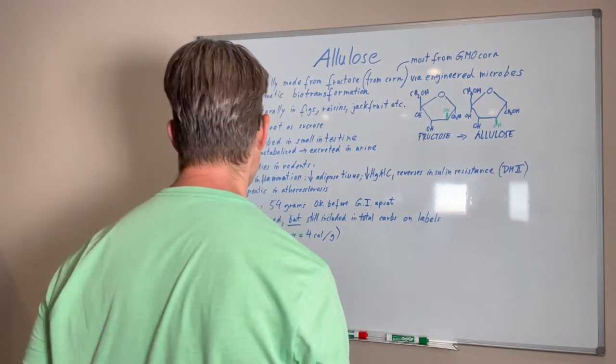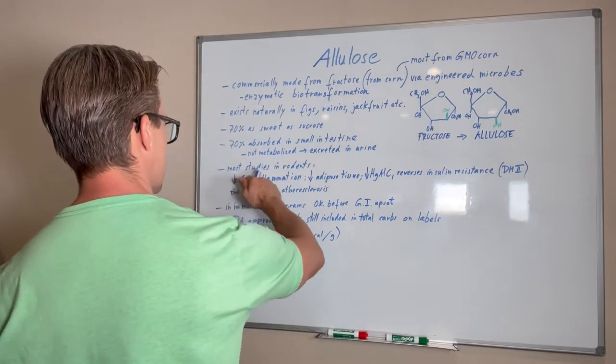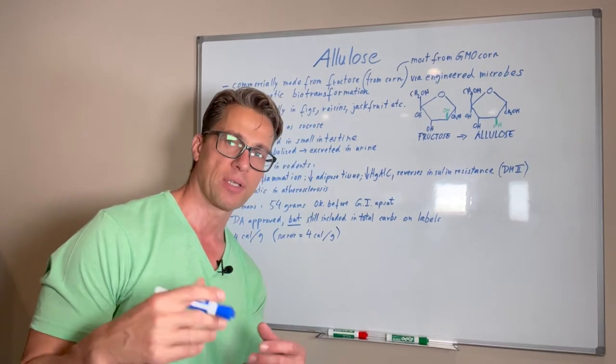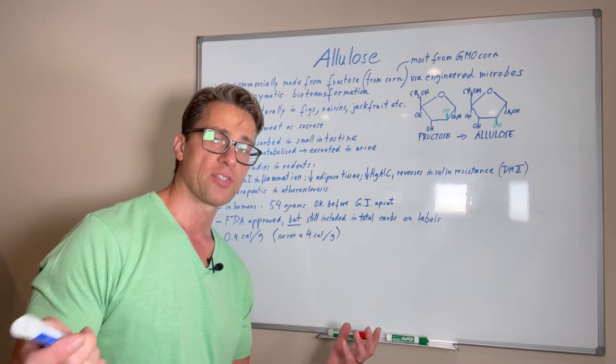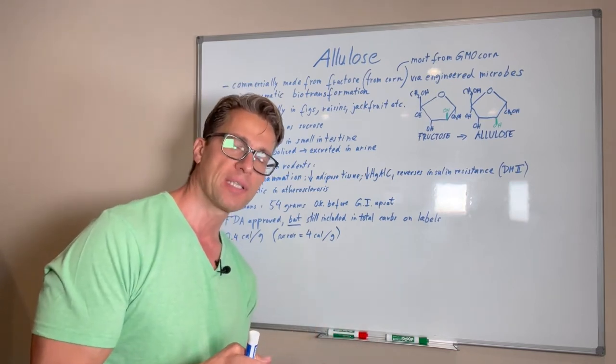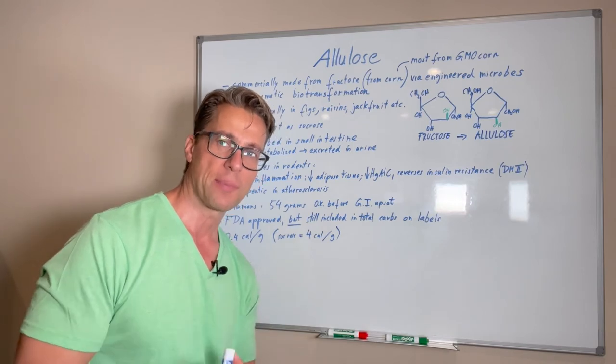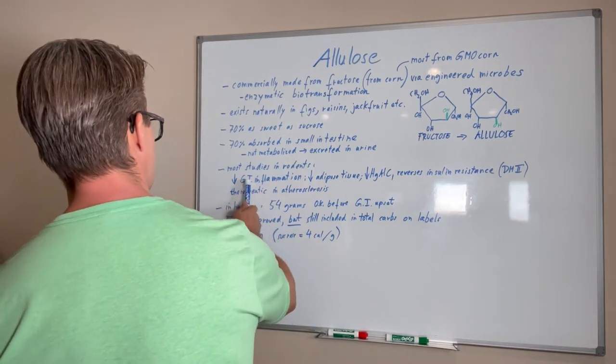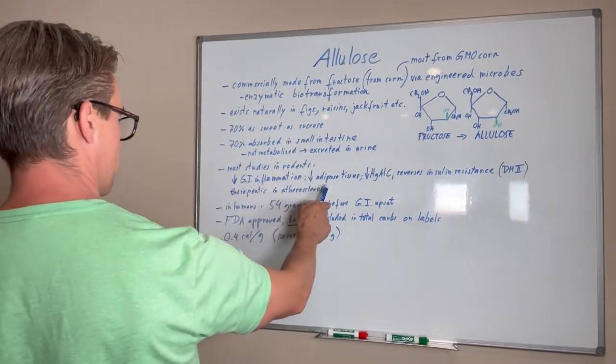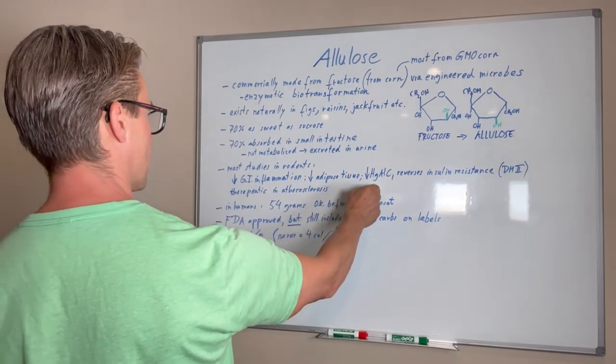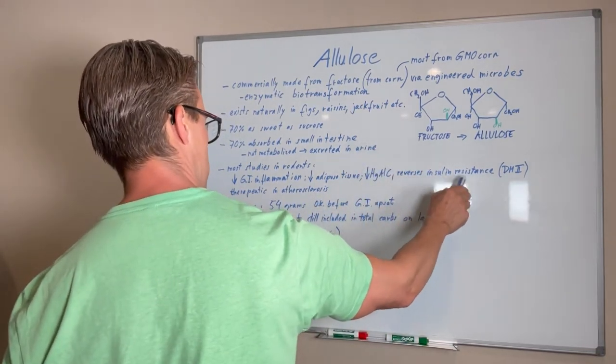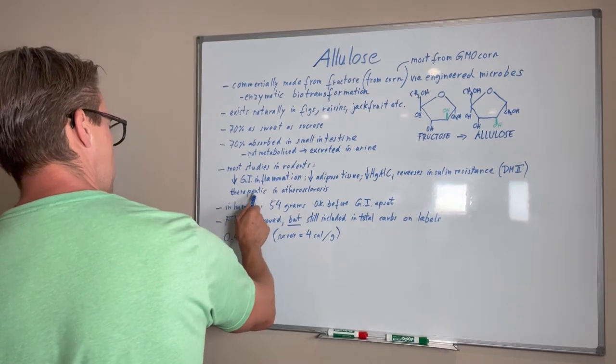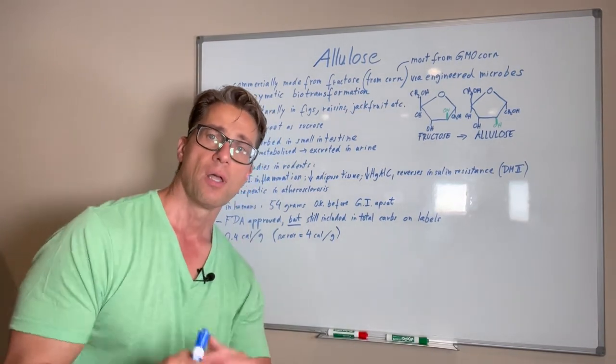So most of the studies, interestingly, that I found were done in rodents. There are some studies in humans that are more safety studies about dosing and all these things. But in rodents, the studies were very interesting. You can't always compare, of course, but it gives you an idea. Of course, we are different types of mammals, but there are certain overlaps. When you look at what they found, it was actually very profound: decreases gastrointestinal inflammation, decreases fat, decreases adipose tissue, decreases hemoglobin A1C, reverses insulin resistance. So it's really something that you can treat diabetes with, technically. This is all in rodents. And it is supposed to be therapeutic in atherosclerosis, and that's an interesting one as well.